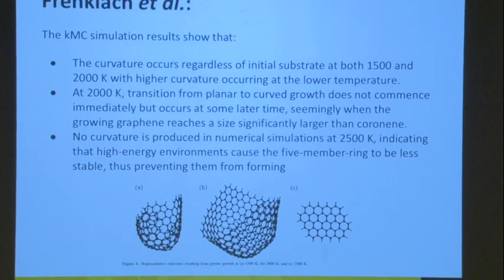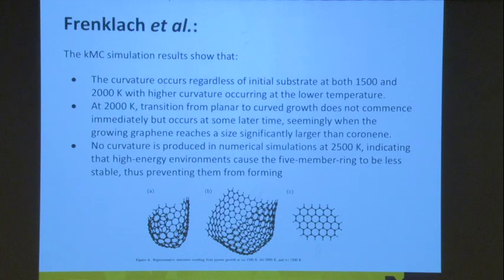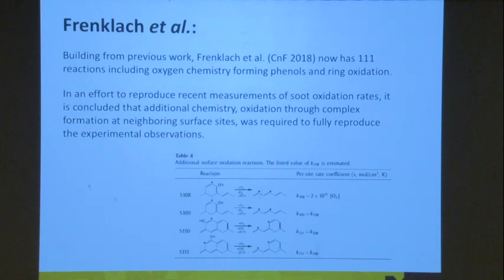The same group also observed that in some cases you start forming curvature species during KMC growth. A more recent paper from Frenklach in 2018 has a list of 111 possible reaction events, including some involving oxygen. The idea is the same: I have a list of possibilities and events, I apply those to my system to see how structures grow.